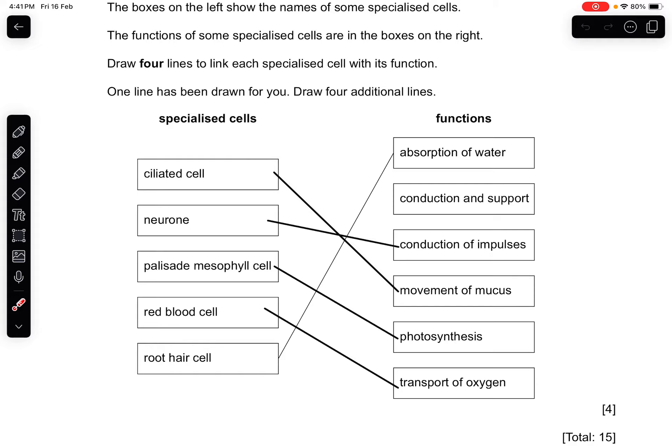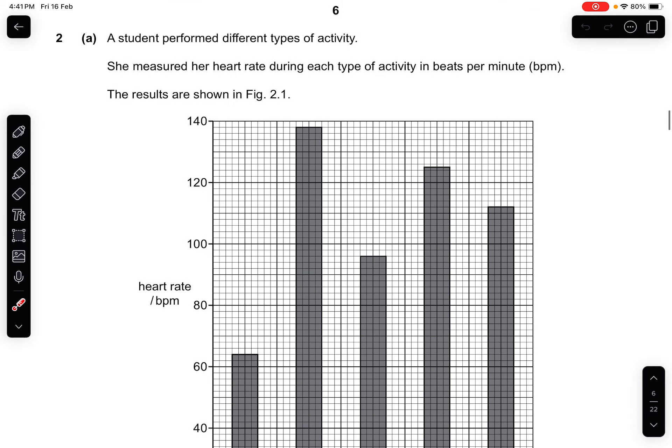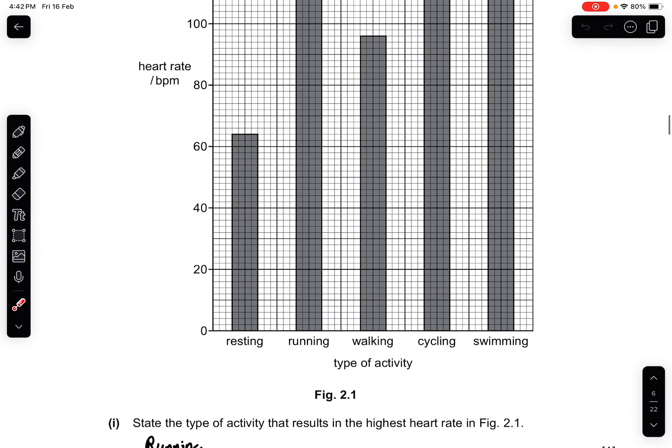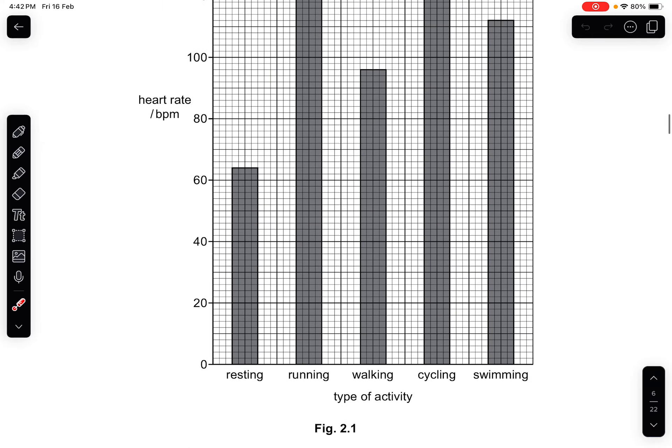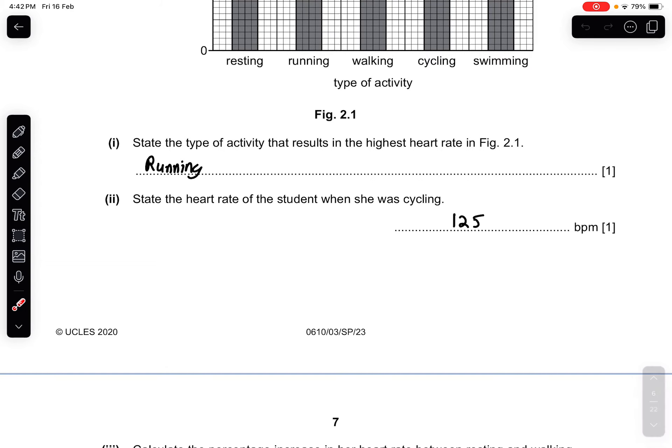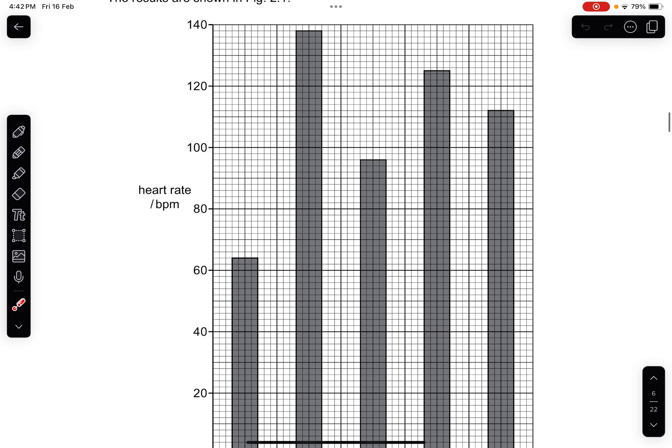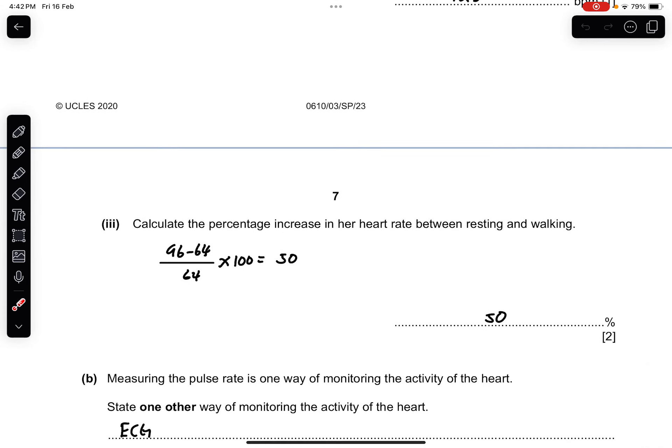Question 2A: A student performed different types of activity. She measured her heart rate during each type of activity in beats per minute. The results are shown in Figure 2.1. Part 1: State the type of activity that results in the highest heart rate, which is running. Part 2: State the heart rate of the student when she was cycling, which is about 125. Part 3: Calculate the percentage increase in heart rate between resting and walking, which is 50%.